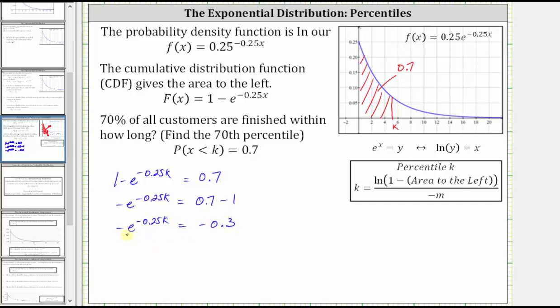Let's multiply both sides of the equation by negative one, which gives us e^(-0.25k) equals 0.3.